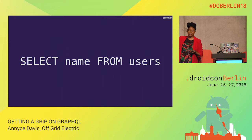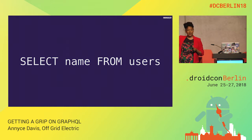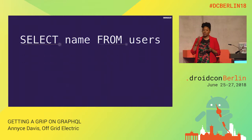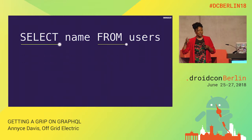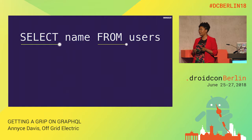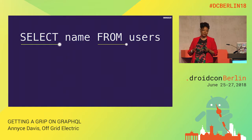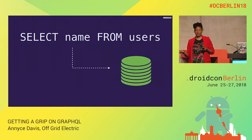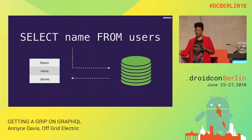SQL — structured query language — is a great example. It's made up of certain keywords like SELECT and FROM that determine the kind of data you're going to get back as a result. In the case of SQL, it talks to a database and then you might get back a list of names. We're going to look at how this works out with GraphQL.